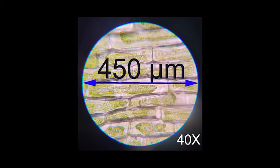Since the diameter of the field of view is 450 micrometers, you can estimate the length of an onion cell by dividing 450 micrometers by the number of cells that you see.